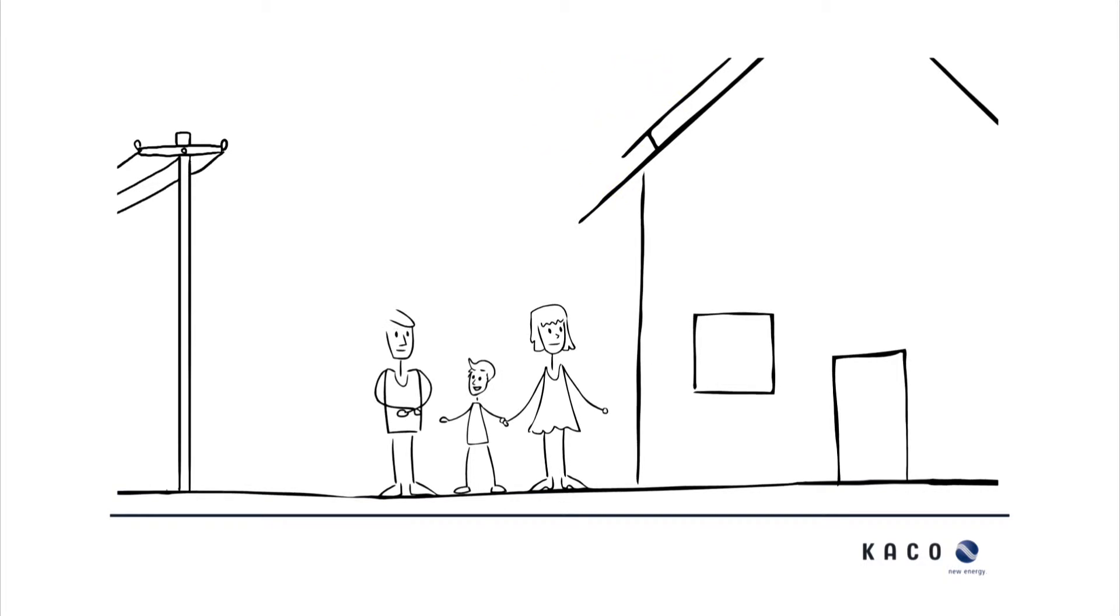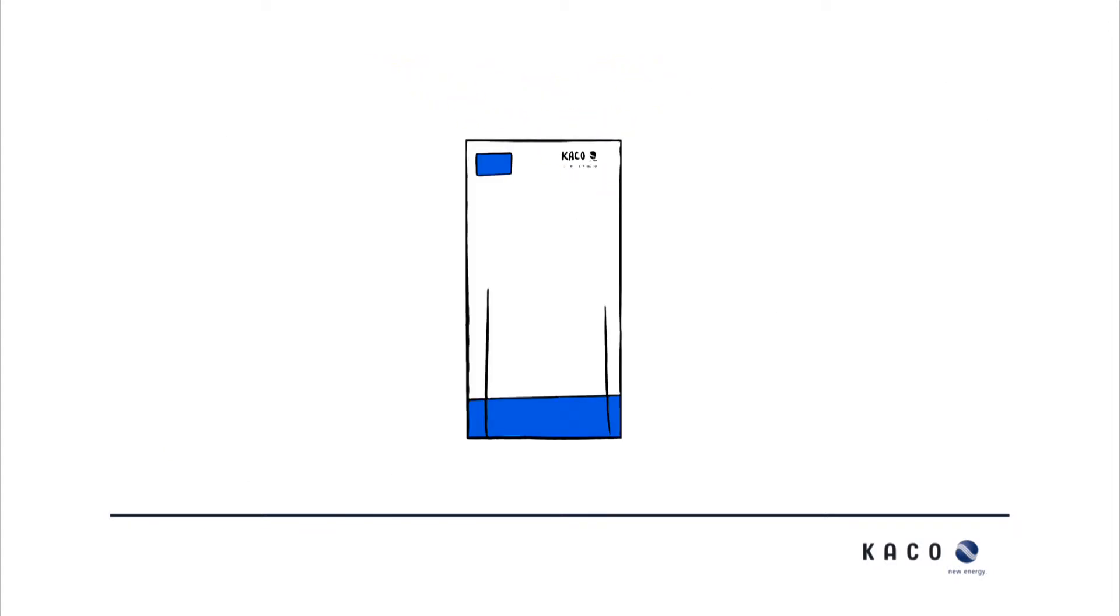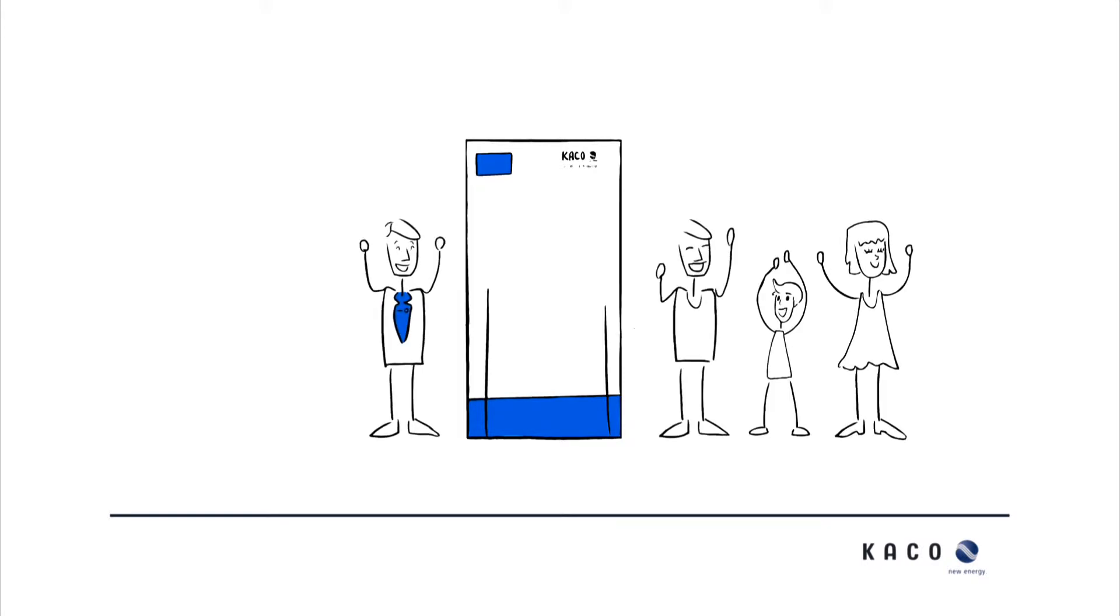As a photovoltaic operator, you no longer have to feed the energy back into the mains network. Instead, you can store it for your own use using the PowerDoor GridSave system from KACO New Energy, the team player for energy storage systems.